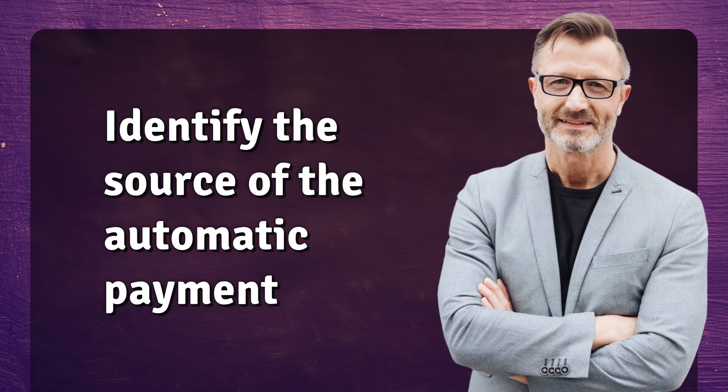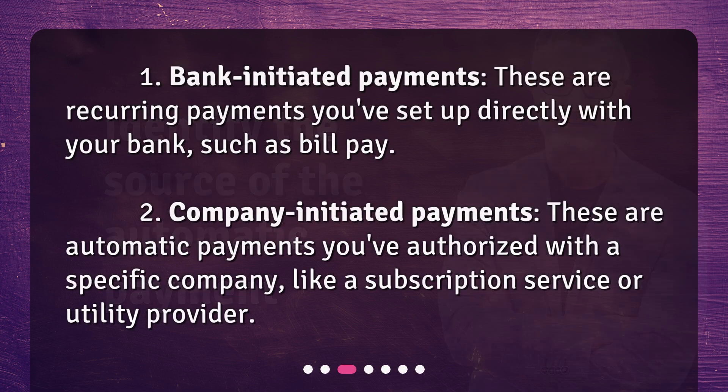Identify the source of the automatic payment. First, bank-initiated payments — these are recurring payments you've set up directly with your bank, such as bill pay. Second, company-initiated payments — these are automatic payments you've authorized with a specific company, like a subscription service or utility provider.